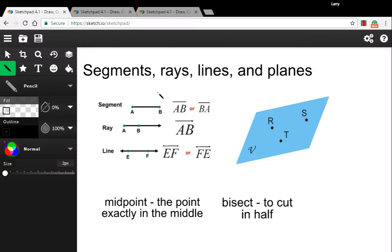Hey everybody, today we're talking about some basic notation for some of the building blocks of geometry. We're talking about segments, rays, lines, and planes, and maybe one or two other things.